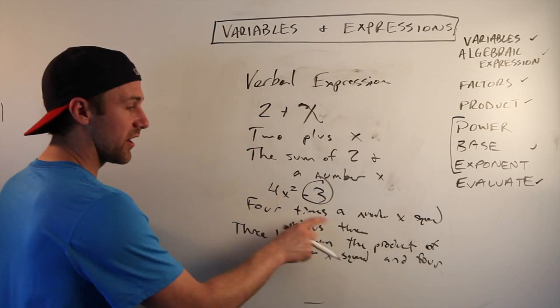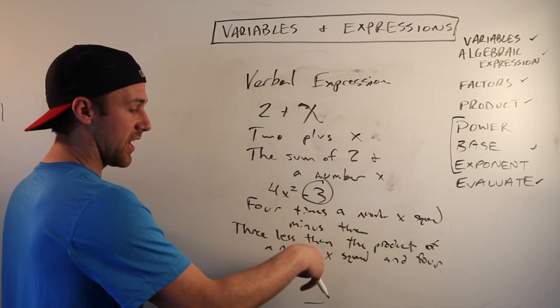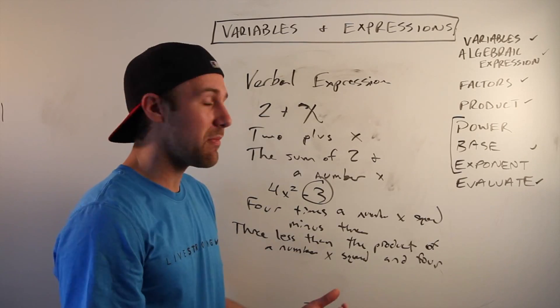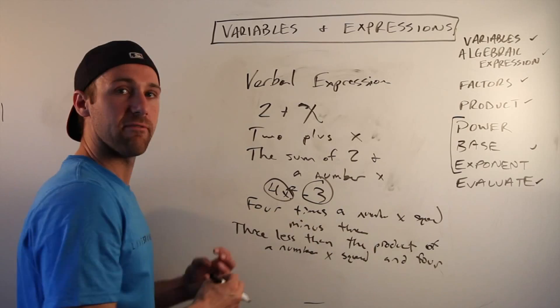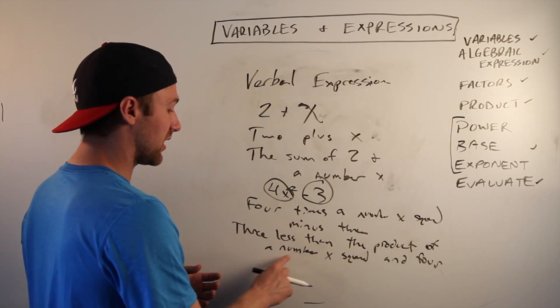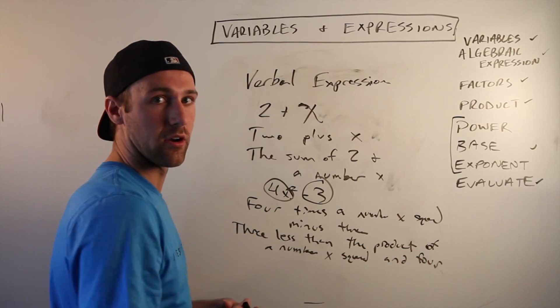Three less than the product of a number x squared and four. Now you're thinking, why don't you just write the product of four and a number x squared. Well, then you might think that you want to square all of this, when we're not. Our original problem just wanted us to square the x. So I put it first. I said the product of a number x squared and four.